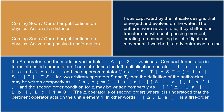Compact formulation in terms of nested commutators: if one introduces the left multiplication operator L_A as L_A(B) equals AB, and the supercommutator [S, T] equals ST minus (minus 1)^|S||T| · TS for two arbitrary operators S and T, then the definition of the antibracket may be written compactly as (A,B) equals (minus 1)^|A| · [delta, L_A] · L_B · 1. The second-order condition for delta may be written compactly as [delta, [L_B, L_C]] · 1 equals 0.